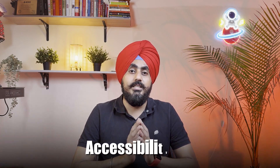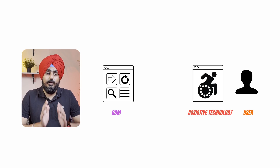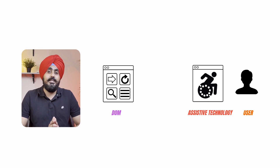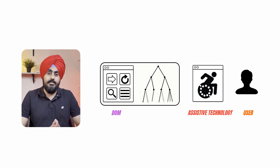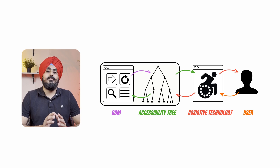To better understand ARIA, we must discuss the accessibility tree. When your browser loads a website, it doesn't just see the HTML — it creates something called the DOM, or Document Object Model, and that's how a browser understands the structure of the page. But screen readers don't read directly from the DOM. Instead, the browser creates another model called the Accessibility Tree. Think of it as a filtered, much simpler version of your website, specifically built for assistive technologies.